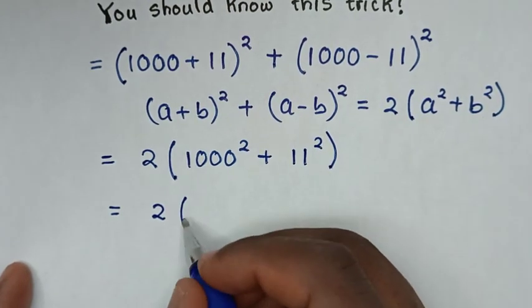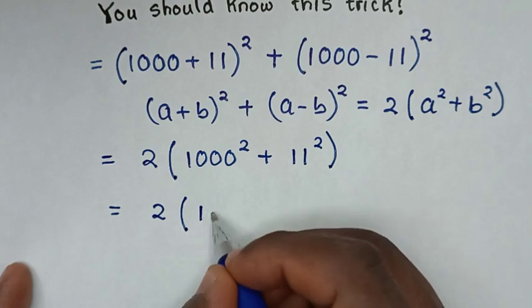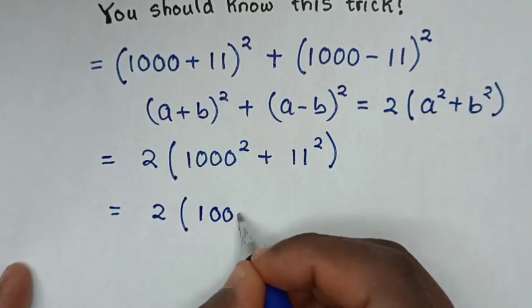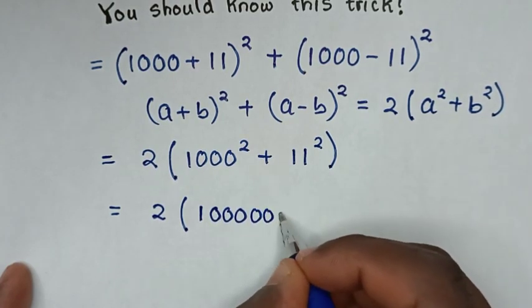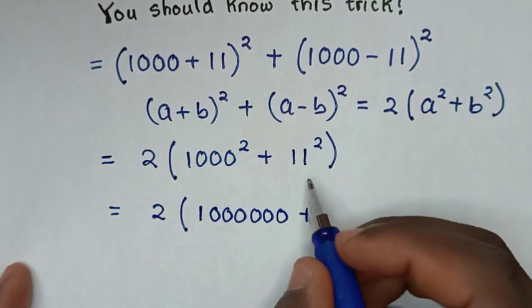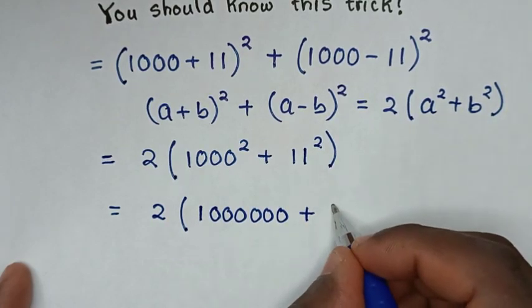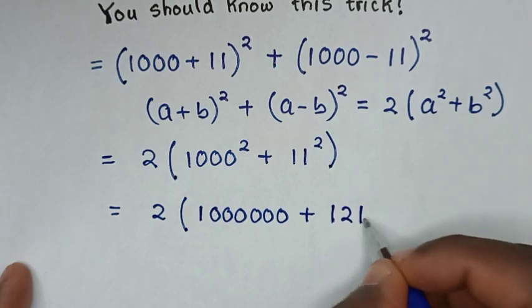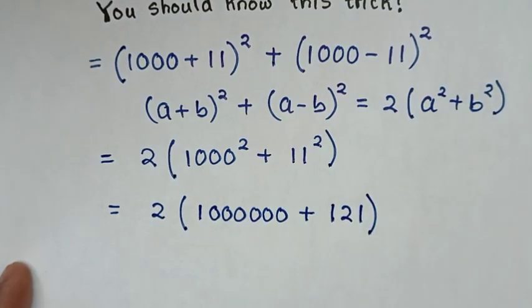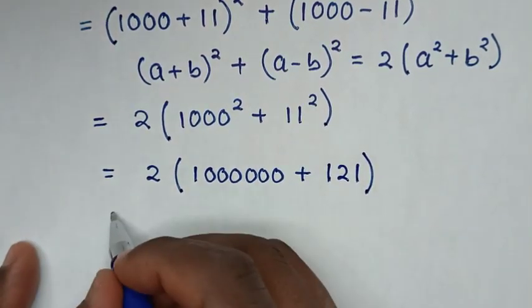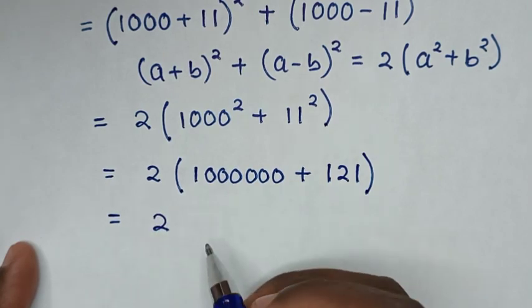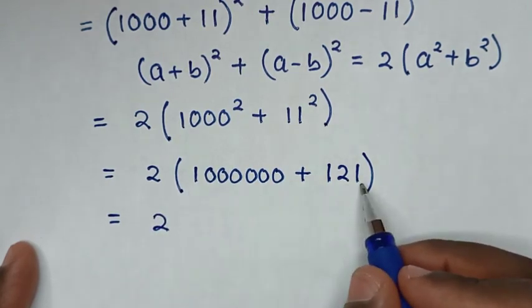So 1 with 6 zeros, then plus 11 square is 121 then bracket. Then the next step it will be equal to 2 then we deal with this operation inside the bracket.